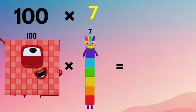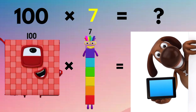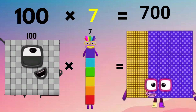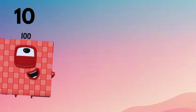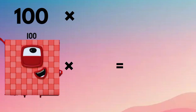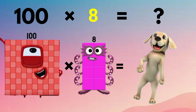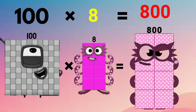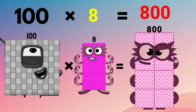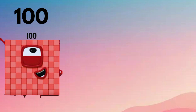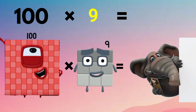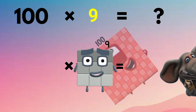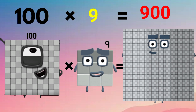100 x 7 equals 700. 100 x 8 equals 800. 100 x 9 equals 900.